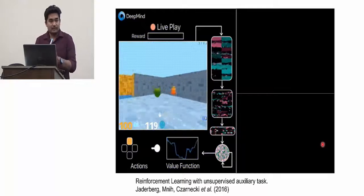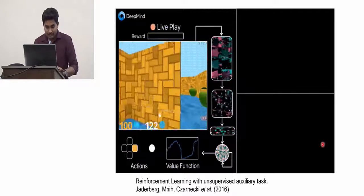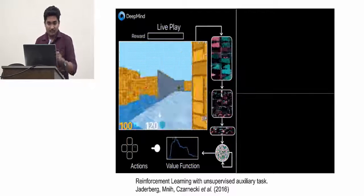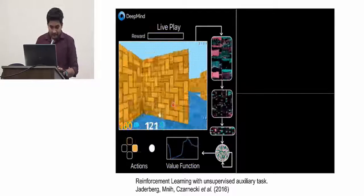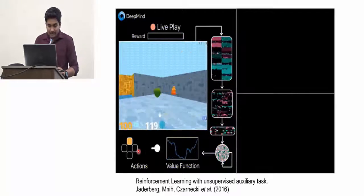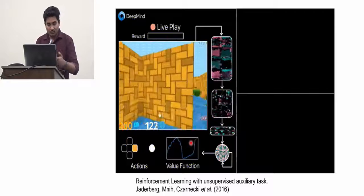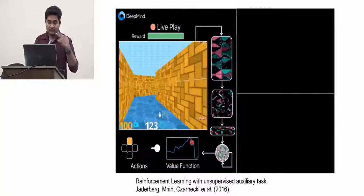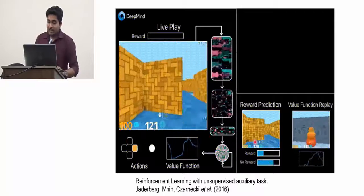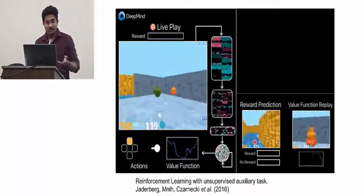This is a 3D simulated environment from the DeepMind paper 'Reinforcement Learning with Unsupervised Auxiliary Tasks.' An agent is moving in a 3D simulated environment toward its goal. The agent can move forward, left, and right. The value function graph shows that whenever the agent moves closer to the goal, the curve reaches its peaks. The reward bar also gets full whenever the agent is close to the goal.